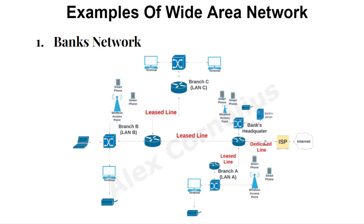Usually, this connection is supplied to the headquarter of the customer — in this case, a bank. So if a bank is trying to obtain an internet service, they will do that at their headquarter. As you can see, this is the bank's headquarter, so it obtains an internet service from this ISP at their headquarter. The next thing is how to extend this service to all of their branches, which could be located in another country, continent, or state. Usually, they use a leased line.